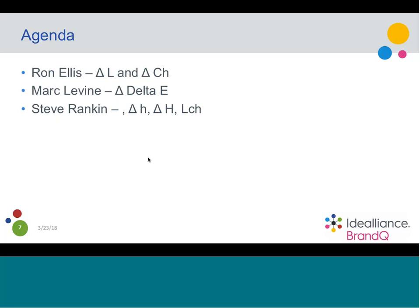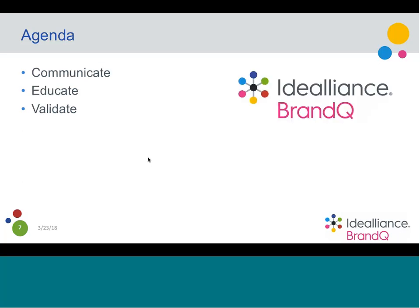What we're going to talk about: first, I'll start off and talk about Delta L and Delta CH. Then Steve Rankin will go second and talk about the Delta Hs, which are kind of an unknown topic — a lot of brands ask questions about them, and some brands in Europe are beginning to specify these. Mark Levine will talk about good old Delta E: where it comes from, what it is, what it works well for, and where it can get you into trouble. Before we start, we'll talk about Brand Q for about three minutes.